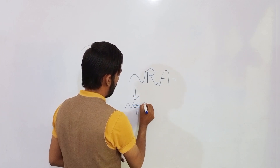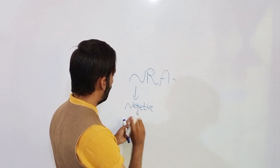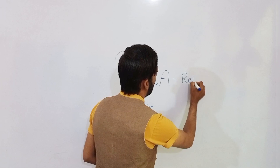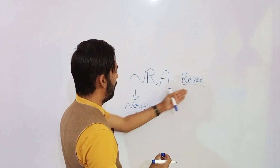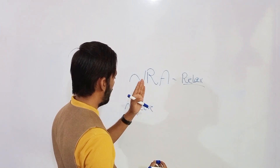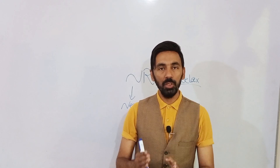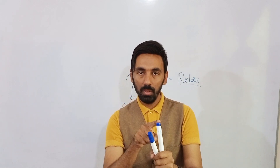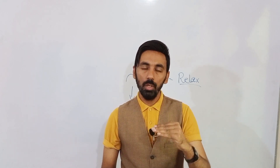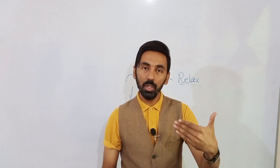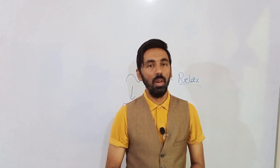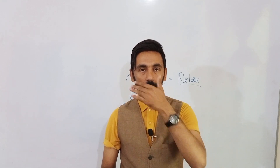NRA stands for Negative Relative Accommodation. 'Negative' here means relax — for the sake of learning and recall, remember that negative means relax. So NRA is the measure of the maximum ability to relax accommodation while maintaining clear and binocularly single vision. It measures how much both eyes can relax accommodation while maintaining binocular single vision.